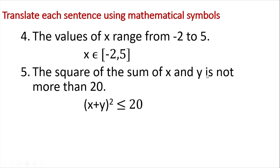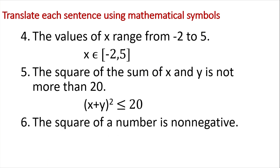That sentence has a meaning. But if we delete 'is not more than 20' and keep only 'the square of the sum of x and y,' that portion is just an expression because it has no complete idea. Similarly, 'the square of a number is non-negative' — meaning it can be 0 or positive — gives us x² ≥ 0. If we have only 'the square of a number,' that is an expression because it has no complete thought.